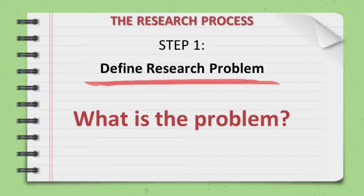Step one of the research process is defining the research problem. It answers the question: what is the problem? Finding an issue or formulating a research question is the first step. Then you have to understand the overview or background of the chosen problem, understand the variables included, and know the purpose, objective, and intention of your chosen study.